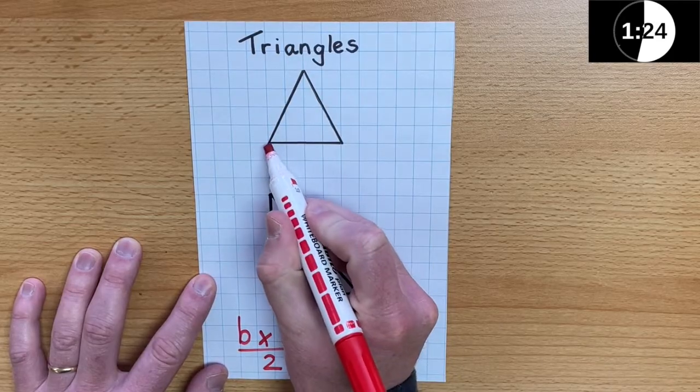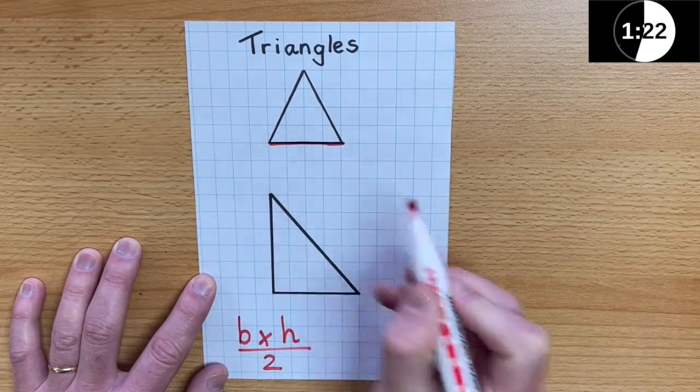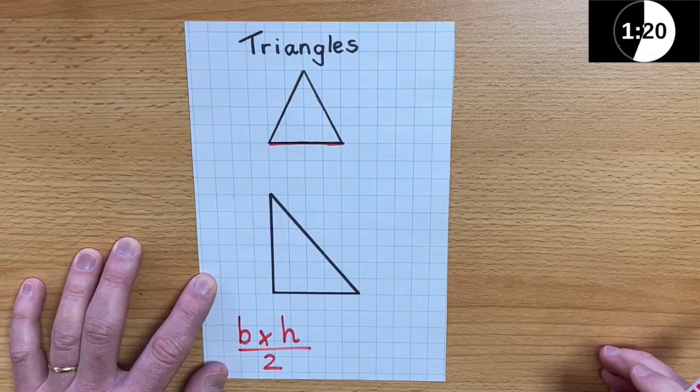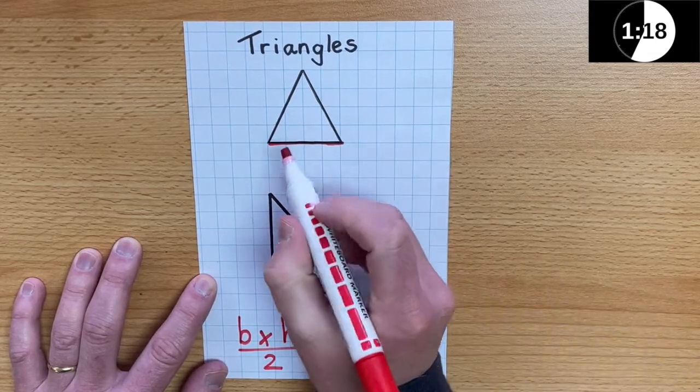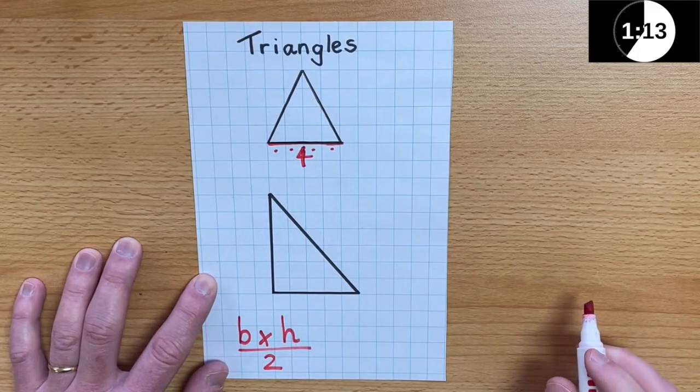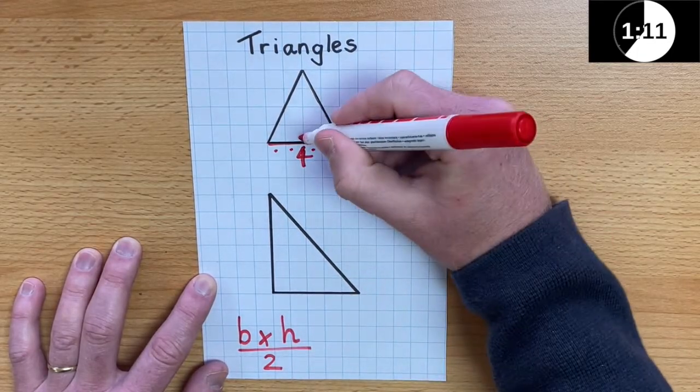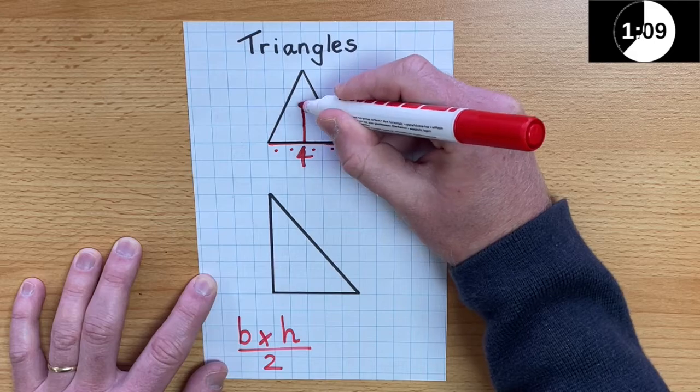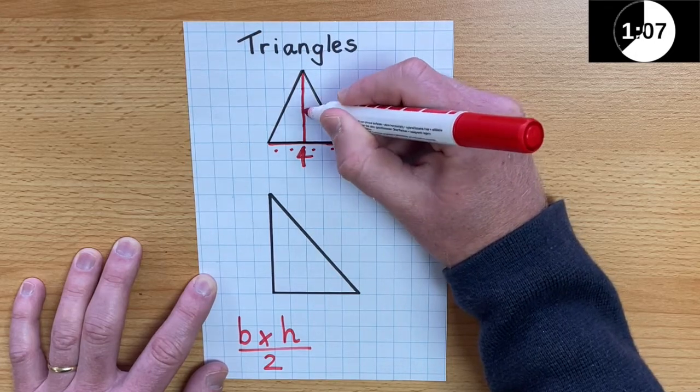So, the base, as with parallelograms, is the bottom of the shape. So, here it's 1, 2, 3, 4. So, the base of this triangle is 4. The height of this triangle, 1, 2, 3, 4, is also 4.